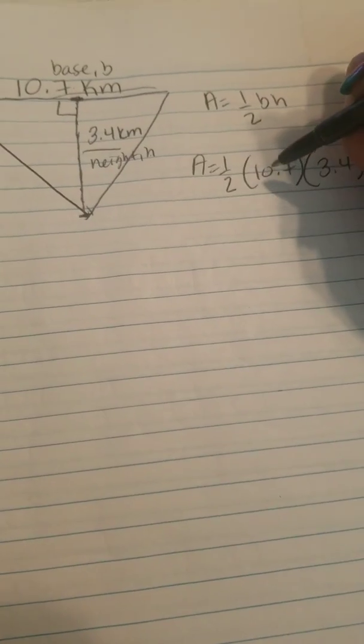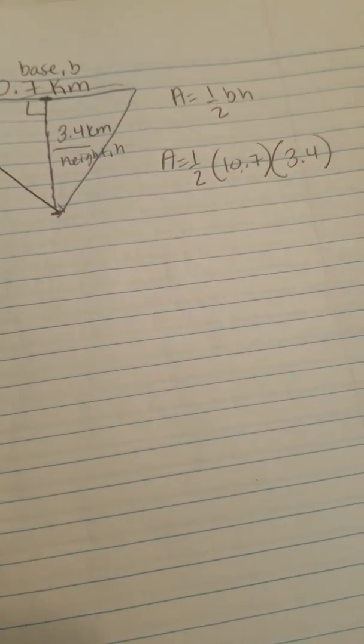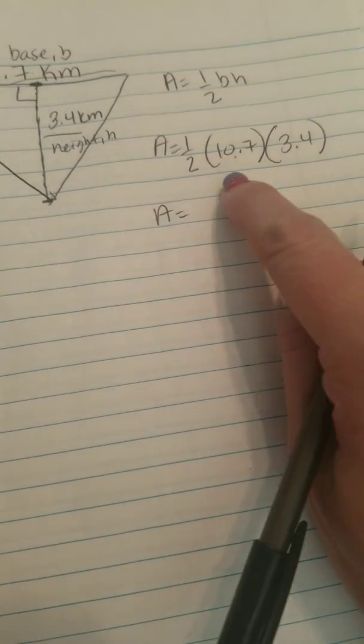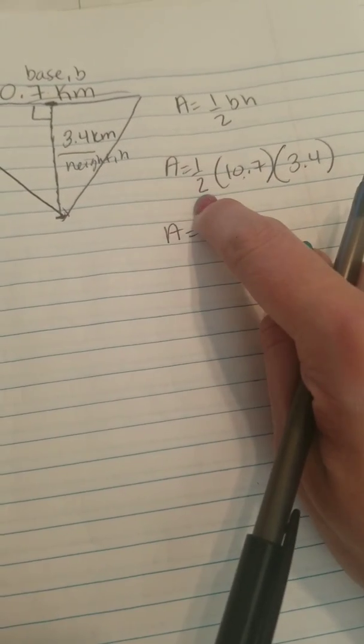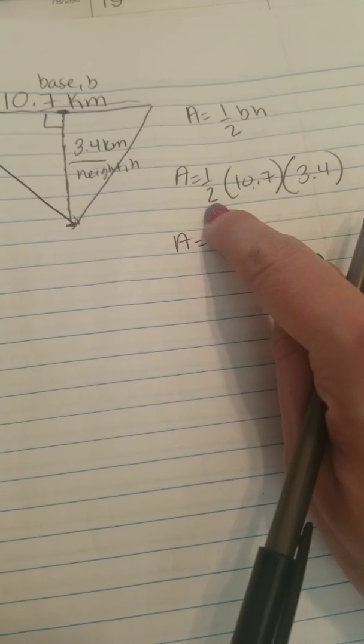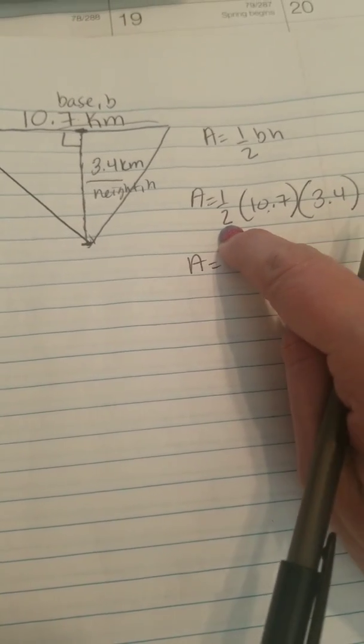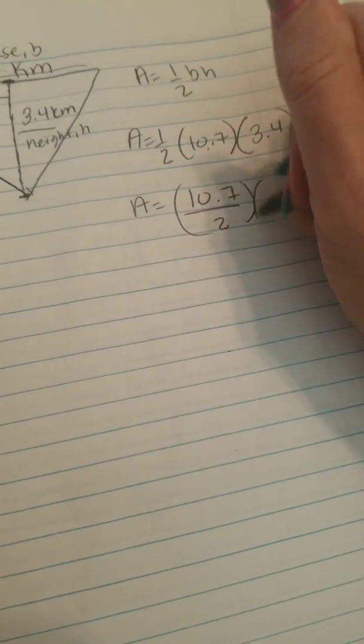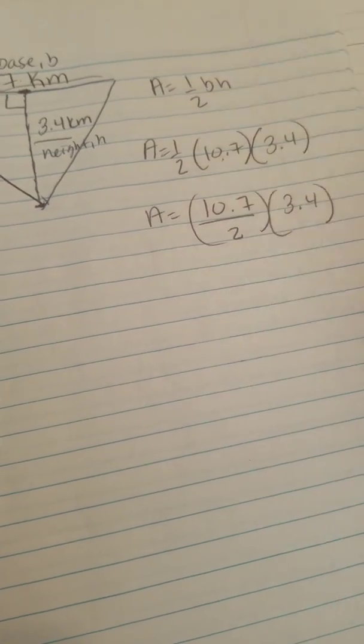Now I'm going to take half of the base and then multiply it by the height. In order to take half of the base, I take 10.7 and divide it by 2, because that is the same as multiplying by a half. So I'm going to do 10.7 divided by 2, and whatever I get I'm going to multiply by the height of 3.4.